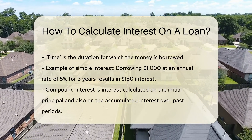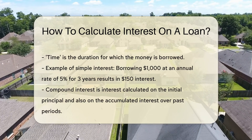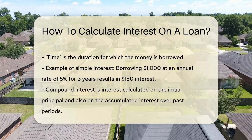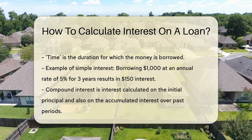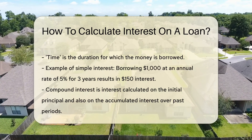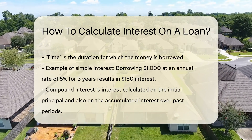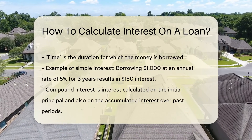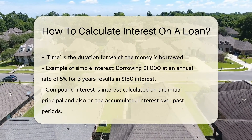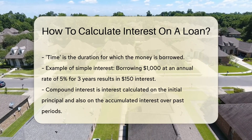Sounds like math class, right? But here's the breakdown. Principal is the amount you borrowed. Rate is the interest rate per period, usually per year. And Time is how long you're borrowing the money.